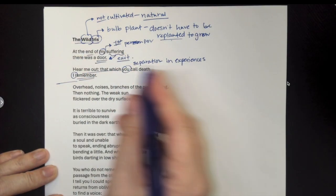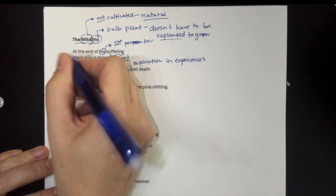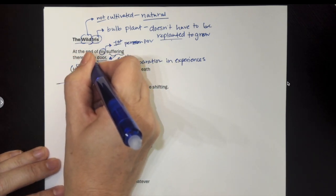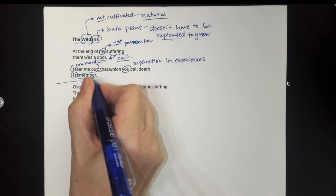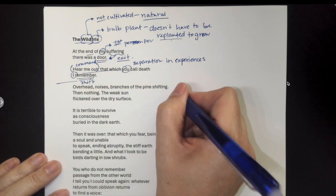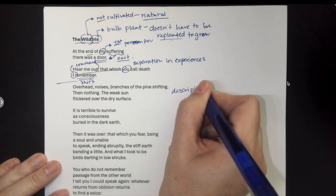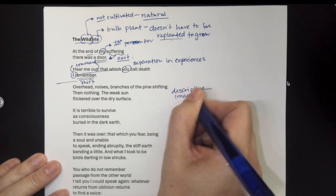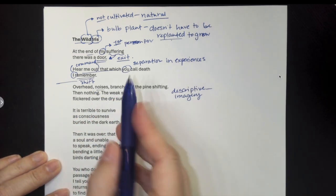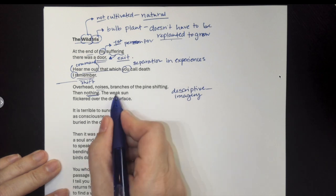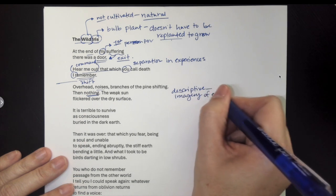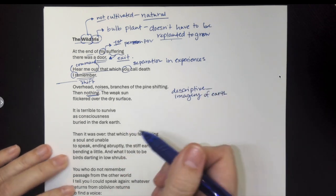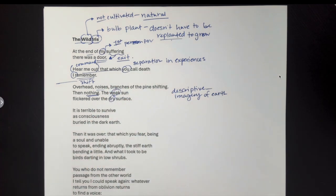So we've got this kind of introduction, this command to listen. And then we switch a little bit. We switch perspectives. There's a shift here because it becomes a lot more descriptive. We've got this imagery of the noises, the branches of the pine shifting, and then nothing. The weak sun flickered over the dry surface. So we've got this descriptive imagery of the earth itself. And notice these words that are used to describe this outside world. The weak sun, the dry surface.